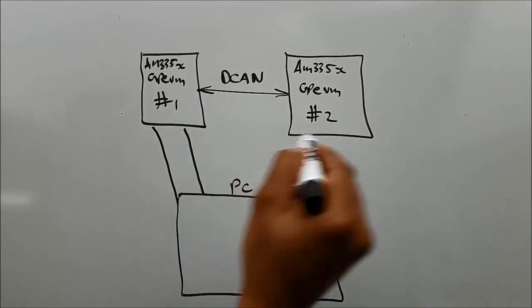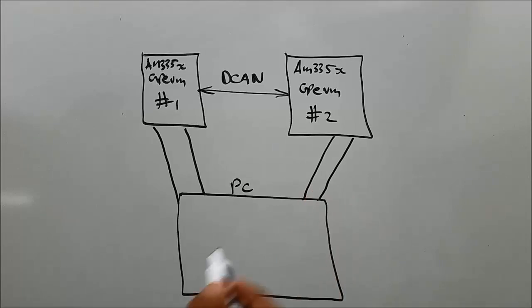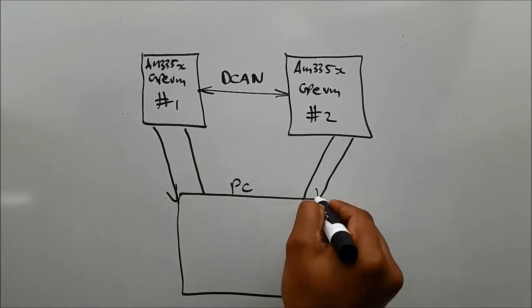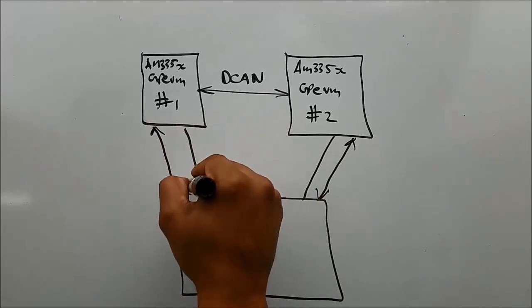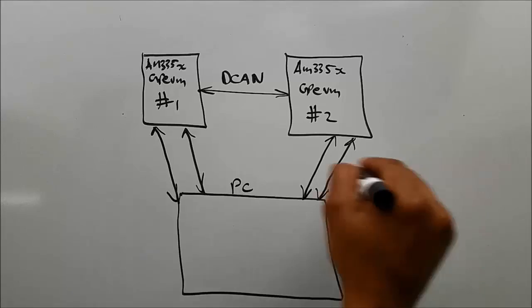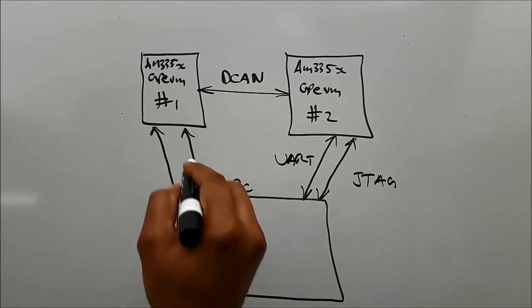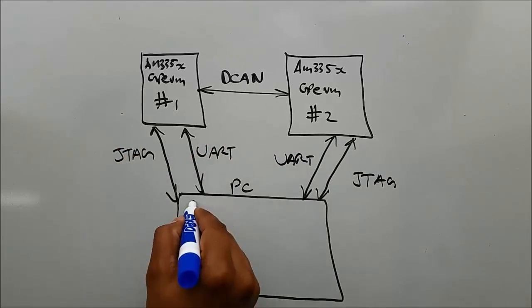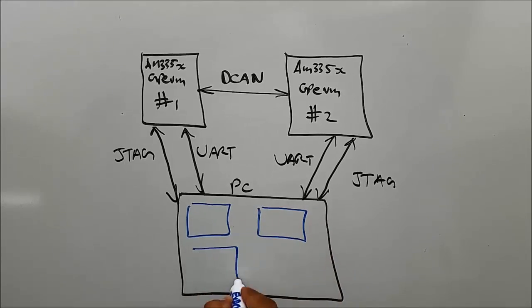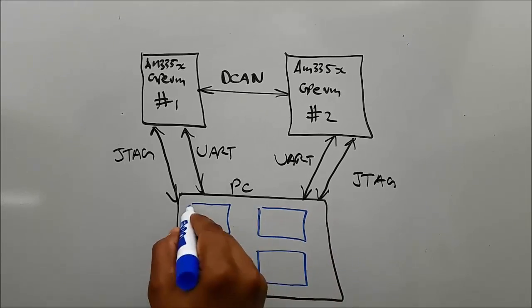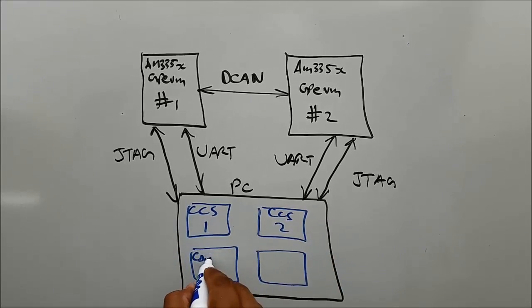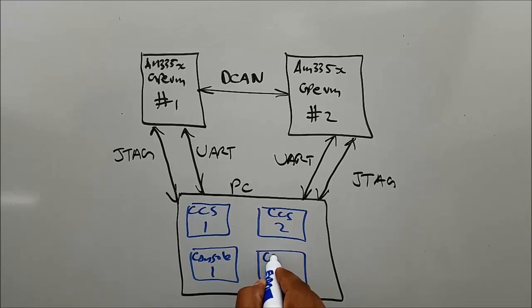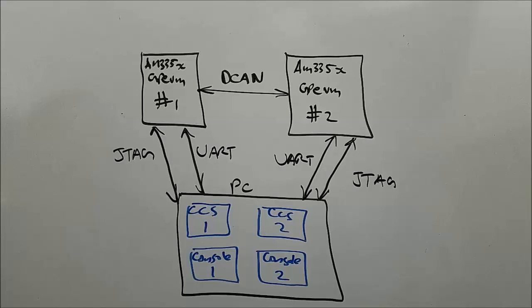CAN frames entered into the console of board number one will be transmitted to board number two and immediately loop back to board number one. This short video will illustrate the steps needed to work with the CAN examples. More information about the CAN driver for the Sitara AM335X can be found in the links at the end of this video.